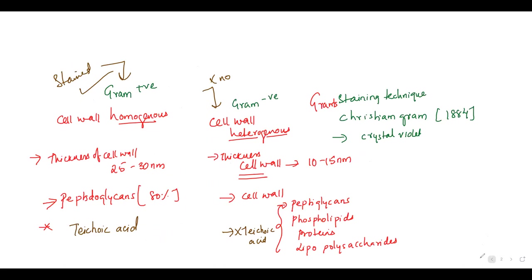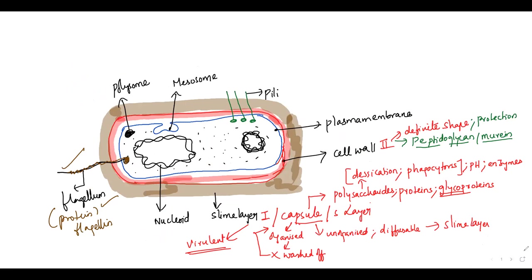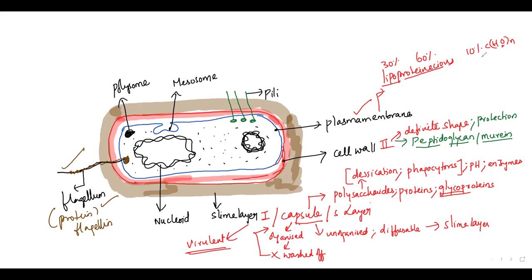These are the types of bacteria based on the classification of the presence of your flagellum. Now coming on to the plasma membrane. As you can see, your plasma membrane is present here — the plasma membrane is actually made of lipids and proteins, so we call it lipoproteinaceous. It comprises 60% proteins, 30% lipids, and only 10% carbohydrates.